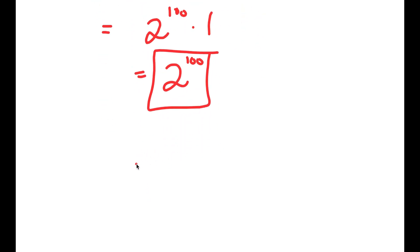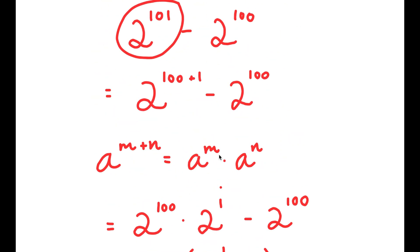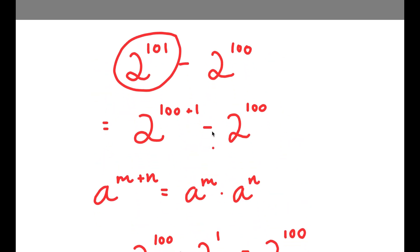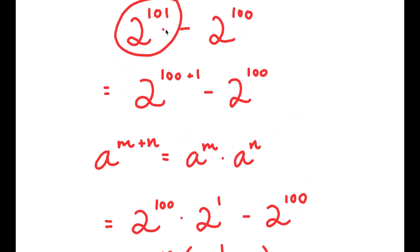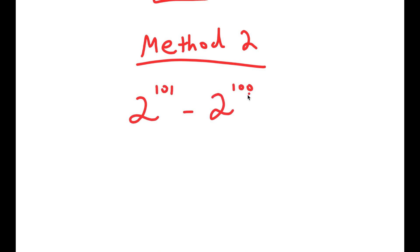Now, there is actually another method of solving this problem. Going back to the problem, I have 2 to the power of 101 minus 2 to the power of 100.